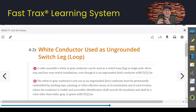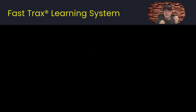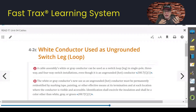Remember, you can't take a white conductor in a raceway and re-identify it. But you do have some allowances in Article 200 for re-identifying a white or gray conductor to be used as a hot conductor inside of a cable assembly. The reason is that the cable assembly is already pre-made, so it's not subject to somebody changing it out in the field.